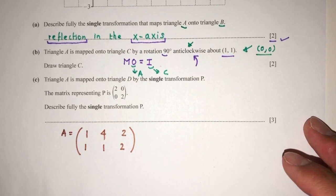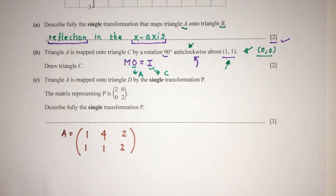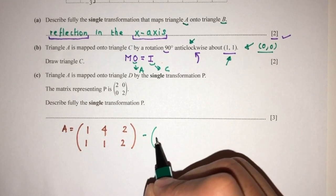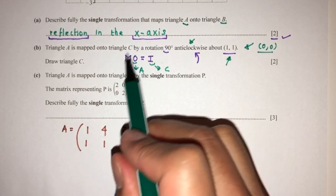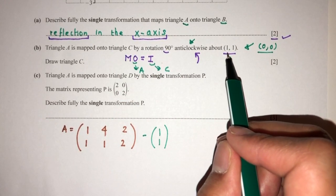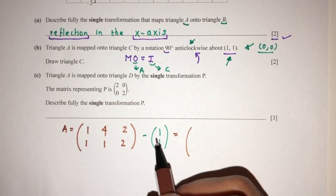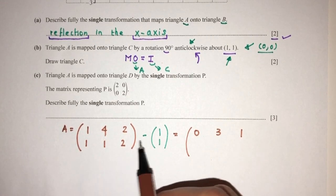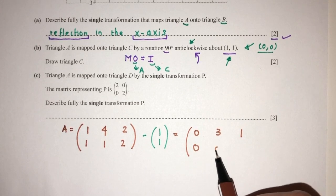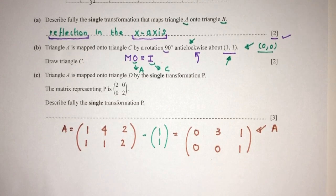Now, because again the center is not (0,0), we have to first minus that from here. Because we cannot use this formula with a center which is not (0,0). So we have to minus it. That's the first step. So 1 minus 1 is 0. That will be 3. And that will be 1. That will become 0, 0, and 1. That is the values that we have to work with, pretend that this is A, so we can use our equation.